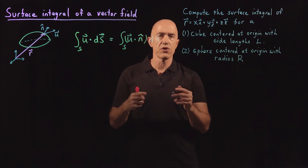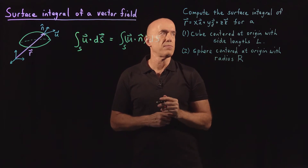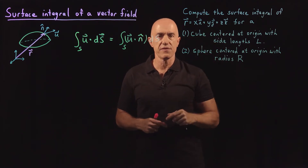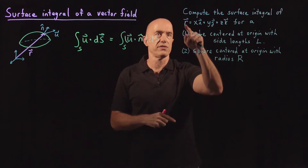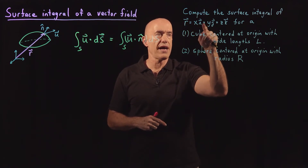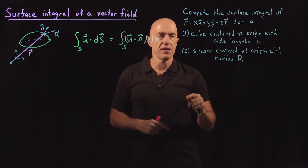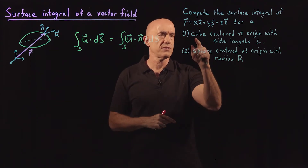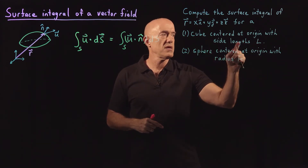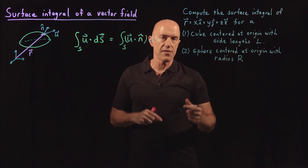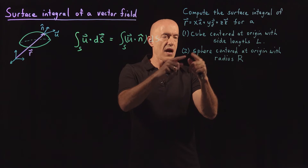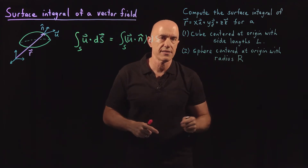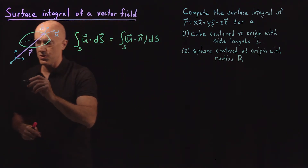To show you how that works, I wanted to do two examples. The vector field we're considering is going to be just the position vector r, so u here is just r — that's xi plus yj plus zk in Cartesian coordinates. We'll consider two types of closed surfaces: a cube centered at the origin with side length L, and a sphere centered at the origin with radius R.